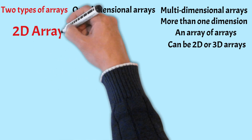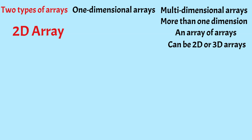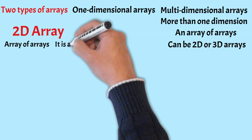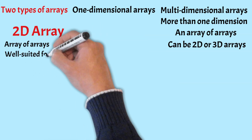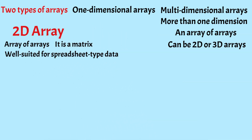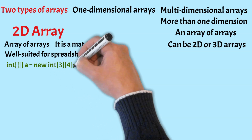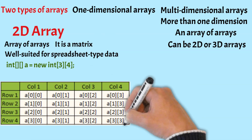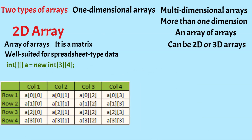A 2D array is an array of arrays where each element inside the array is a 1D array. A 2D array is a matrix and is well suited for spreadsheet type data. For example, we can have a 2D array for 3 students to store marks for 4 subjects. To do so, we create an array with 3 rows and 4 columns.